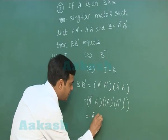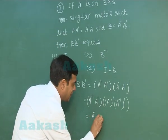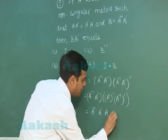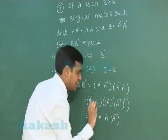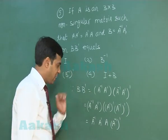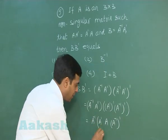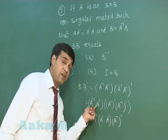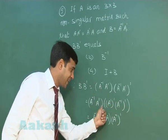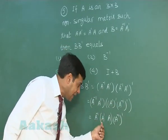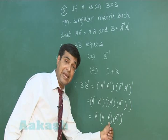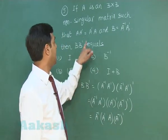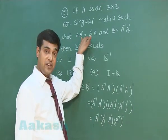So we have A-inverse · A-transpose · A · A-inverse-transpose. Let us regroup — instead of taking first two and last two, let us take the second and third together, because A-transpose · A can be rewritten using the given property as A times A-transpose.